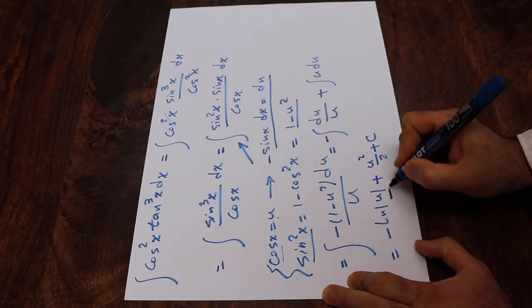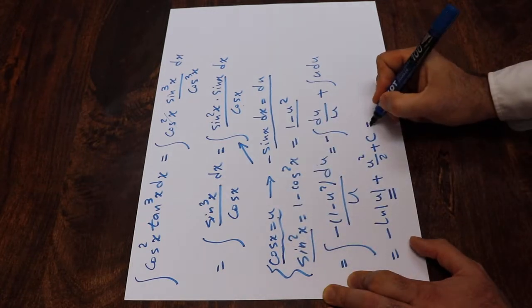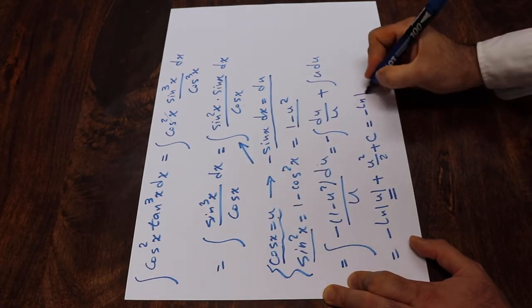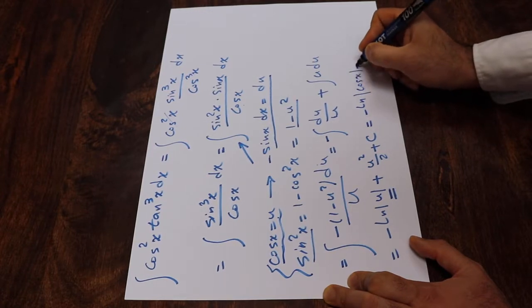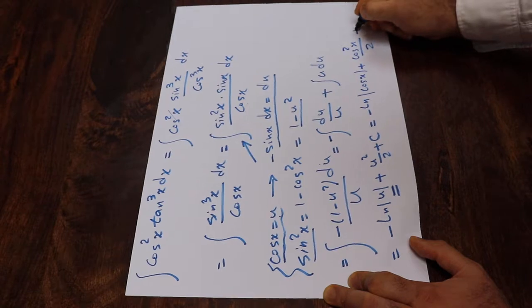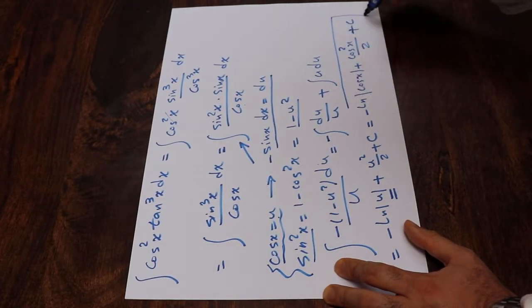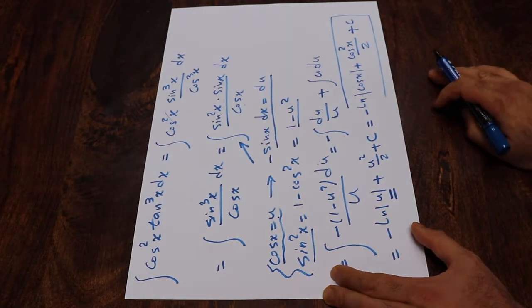So here, all you need to do is to substitute this parameter u with the definition of u, which is cosine x. So that will be equal to minus ln cosine x plus cosine square x divided by 2 plus c, which is the constant of the integral. And that is the solution to our integral.